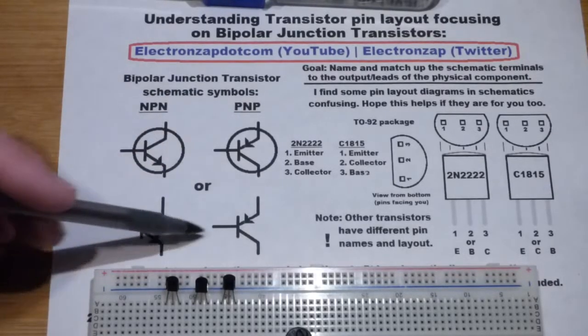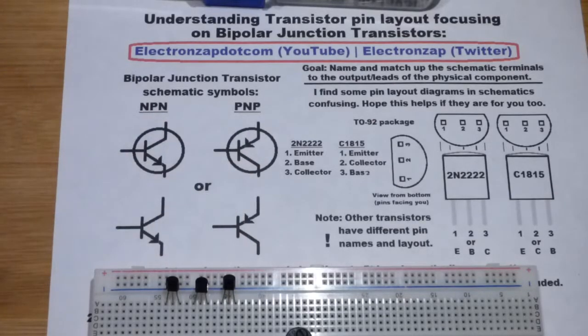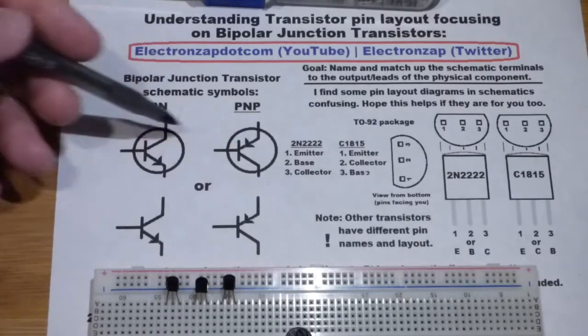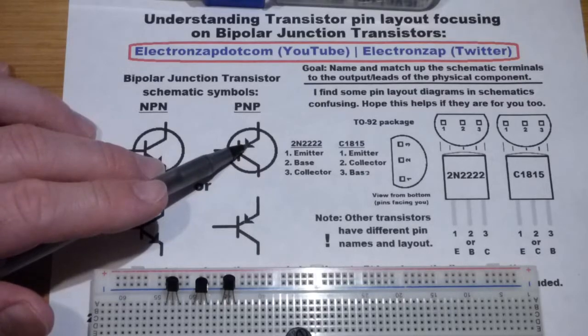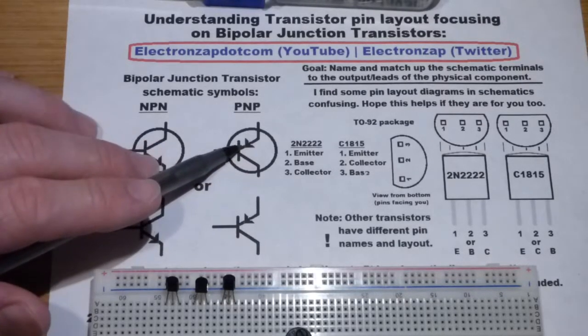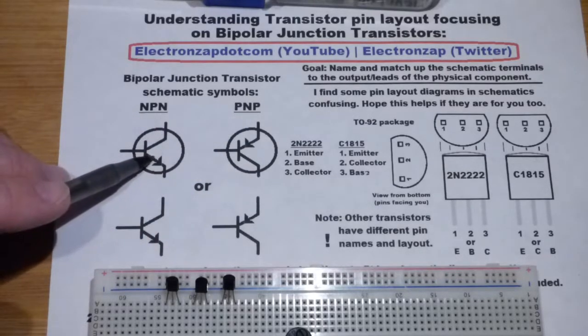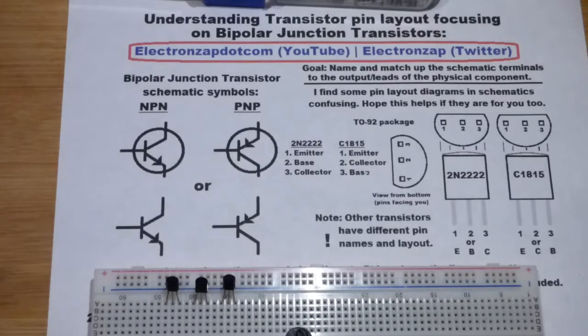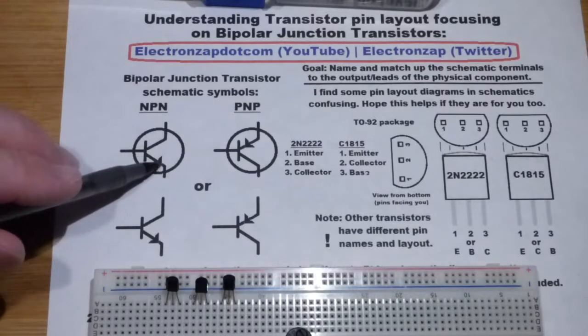The schematic symbol looks like this. It may be circled or not circled, and it doesn't matter - it's the same schematic symbol. What you're mostly looking at is this arrow here. If the arrow's pointing in towards the base, then you know it's a PNP transistor. If the arrow's pointing away from the base, it's easy to remember: NPN - not pointing in.